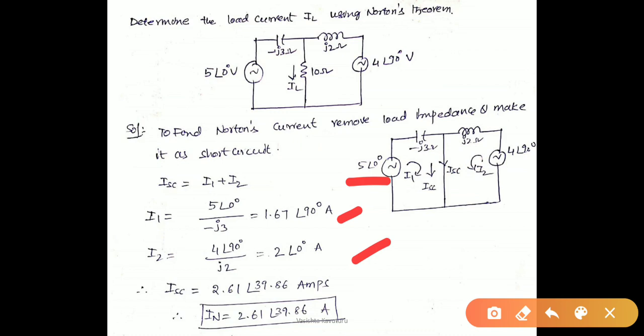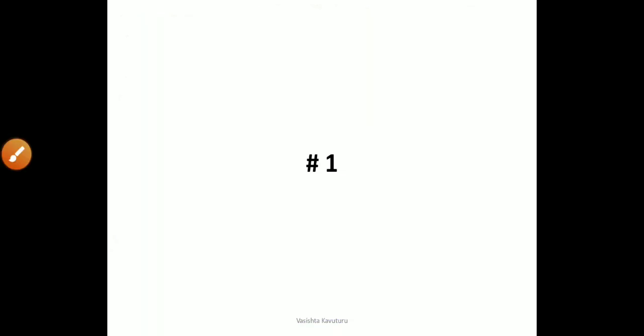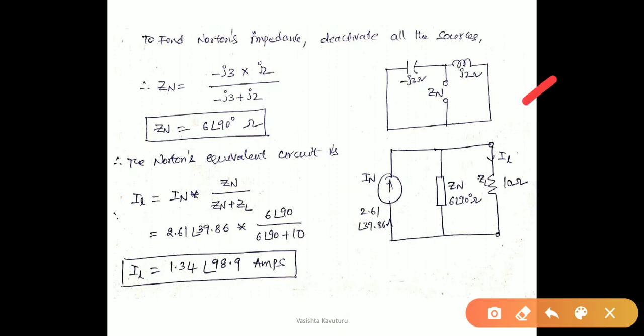Then we have to calculate the Norton's impedance. For an AC circuit, to calculate the Norton impedance, we have to remove the load impedance to form an open circuit, and deactivate all the sources by short circuiting the voltage sources. From the equivalent circuit with respect to ZN, the two impedances minus J3 and J2 are in parallel. Therefore ZN equals minus J3 multiplied by J2, divided by minus J3 plus J2, which is calculated as 6 at an angle 90 degrees ohms.